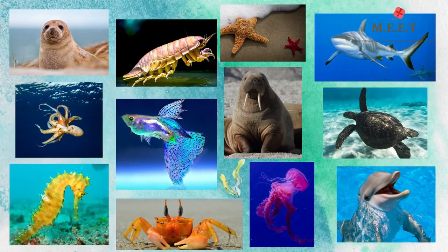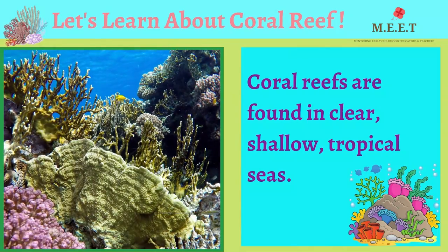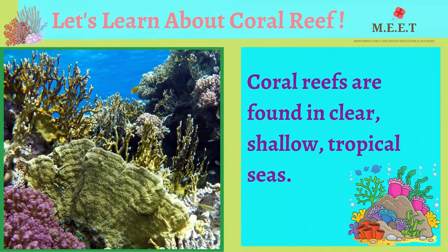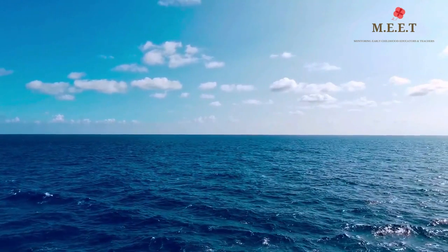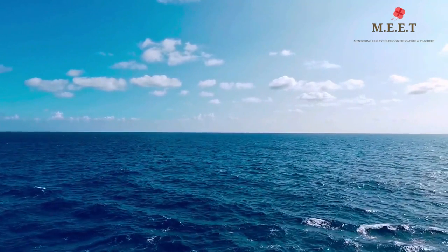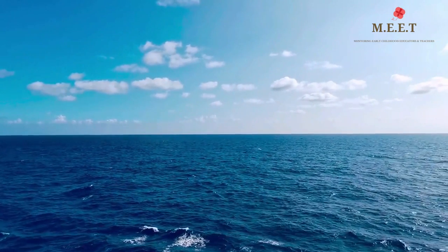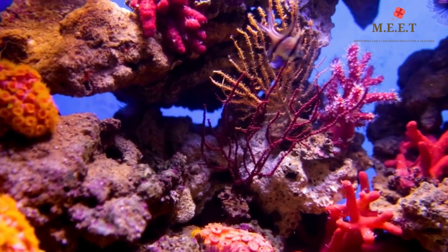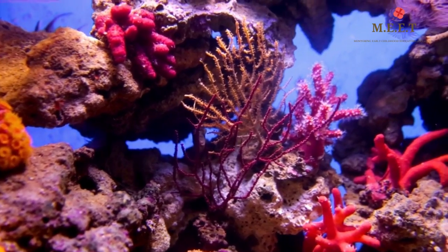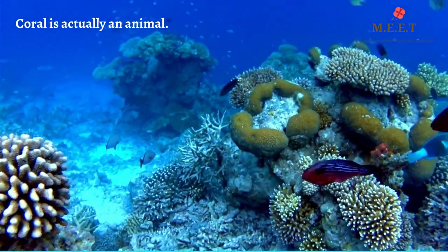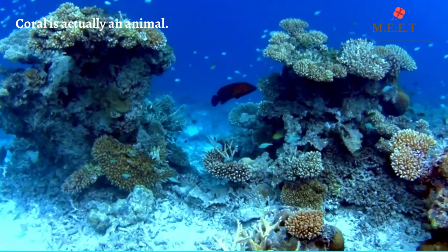Hello children, let's learn about the coral reefs today. From up above the ground, the ocean looks empty, barren and uninhabited, like a desert made of water. But let's look at it from below the waves, as we explore a riot of colors that exists within it. Coral reefs are found in clear, shallow tropical seas.